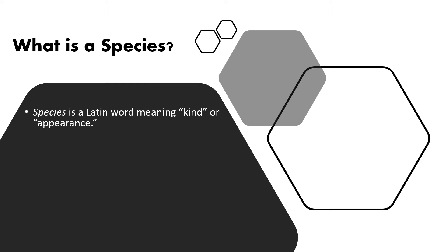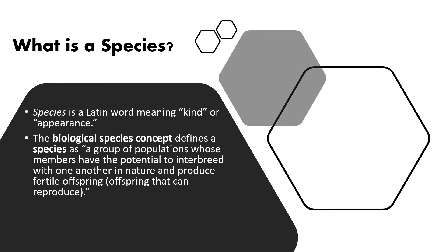So what is a species? The word species has the Latin meaning of 'kind' or 'appearance.' When we talk about the biological species concept, this means a group of organisms that can interbreed with one another and produce fertile offspring. If a male and female come together and mate, they can have offspring that are themselves fertile and can produce their own offspring. The ability to interbreed is central to speciation.